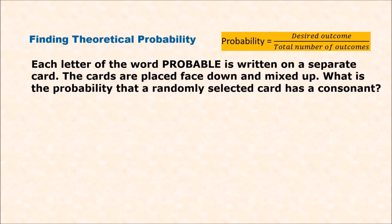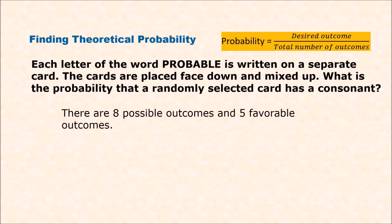To find theoretical probability, we divide the desired outcome over the total number of outcomes based on the possible outcomes of an event. For example, each letter of the word PROBABLE is written on a separate card. The cards are placed face down and mixed up. What is the probability that a randomly selected card has a consonant? Our favorable outcome here is to get a consonant, so we count how many consonants there are: P, R, B, B, and L — that's five consonants.